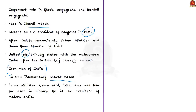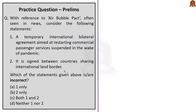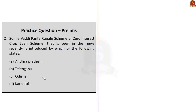Now let us look at the prelims practice questions. With reference to the air bubble pact: Statement 1 — it is a temporary international bilateral agreement aimed at restarting commercial passenger services suspended in the wake of the pandemic; Statement 2 — it is signed between countries sharing an international land border. Statement 1 is correct. Statement 2 is incorrect because there is no such specification for these pacts — India has entered into air bubble arrangements with more than 25 countries including USA and Canada, which do not share a land border with India. The right option is B — Statement 2 only.